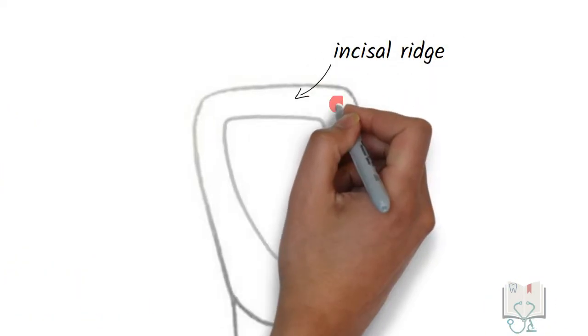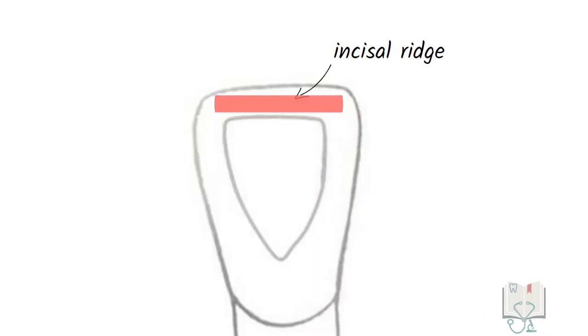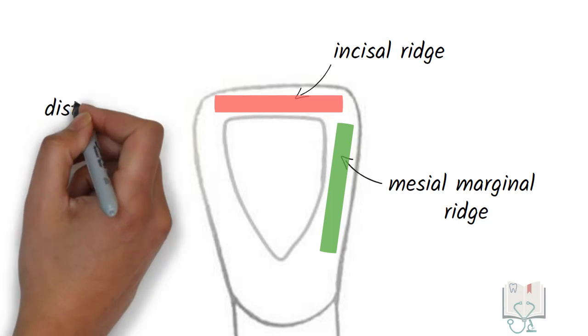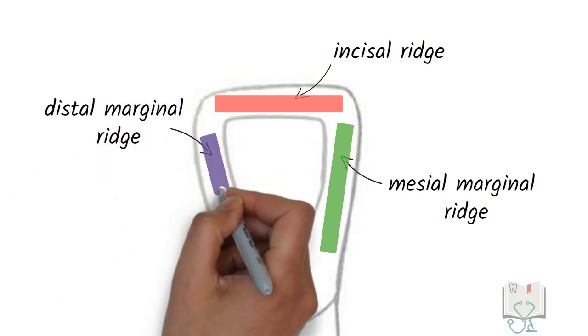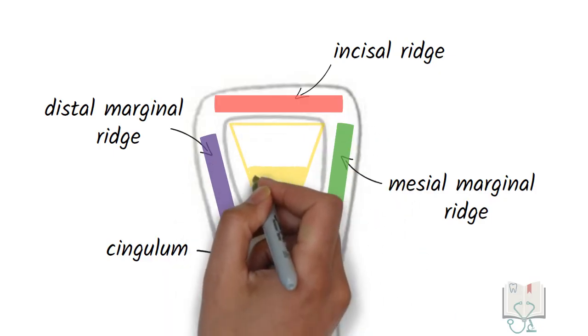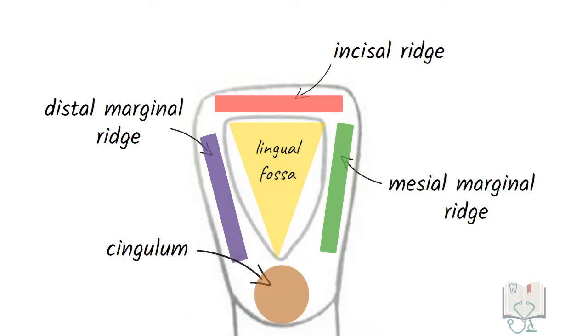Incisal ridge runs between the mesoincisal angle and distoincisal angle. Mesial marginal ridge is present on the mesial border and distal marginal ridge on the distal border. Cingulum is present in the cervical third. A concavity is seen in the middle of all these convexities called the lingual fossa.